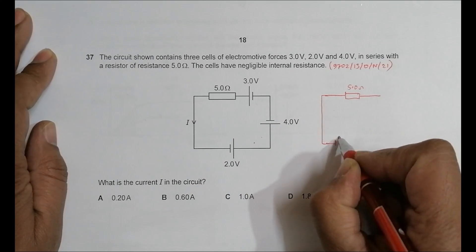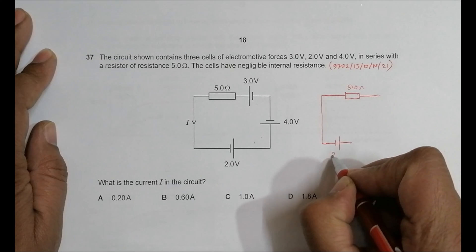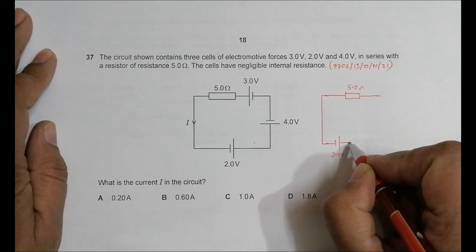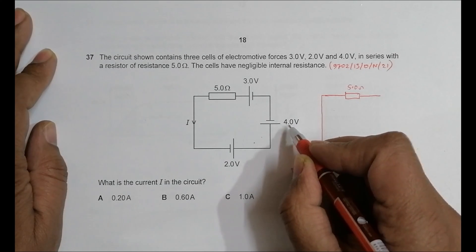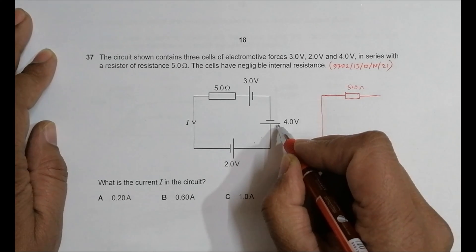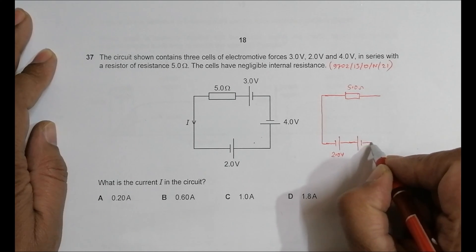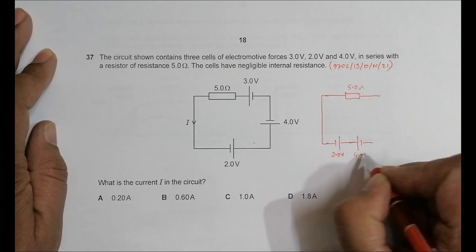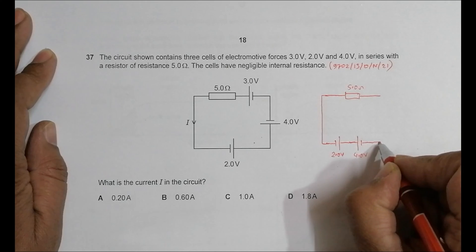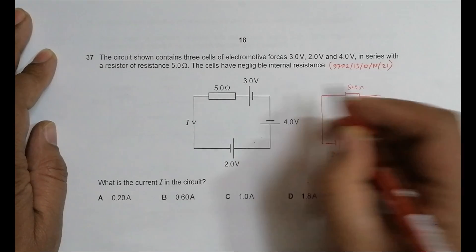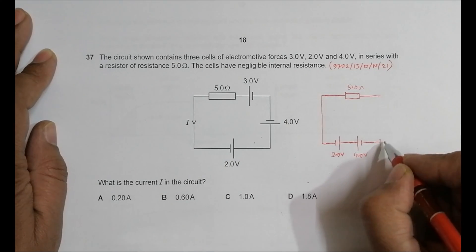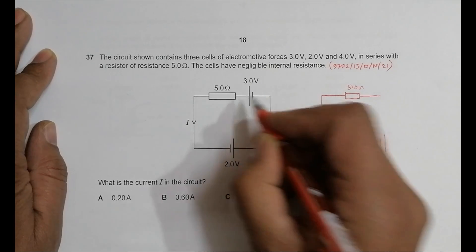Then comes here, we have this 2.0 volt like this. Then comes the 4V - from here comes the positive terminal of 4V, it should be the positive of 4V then negative of 4V. So this is 4.0 volts.